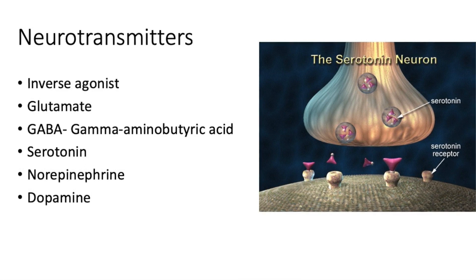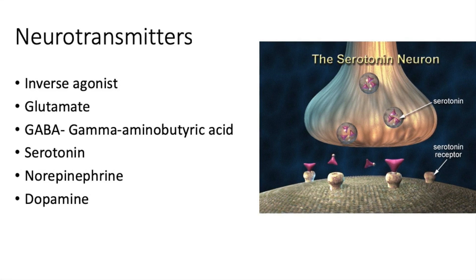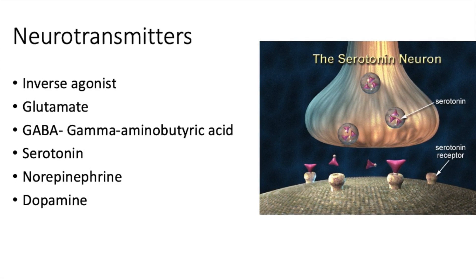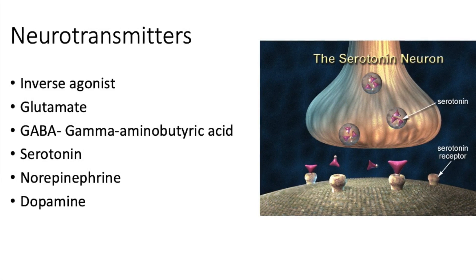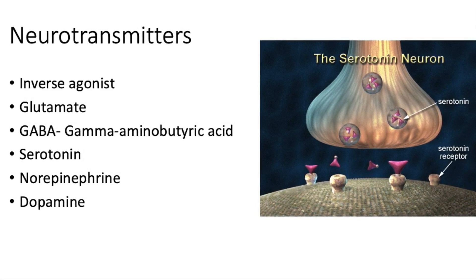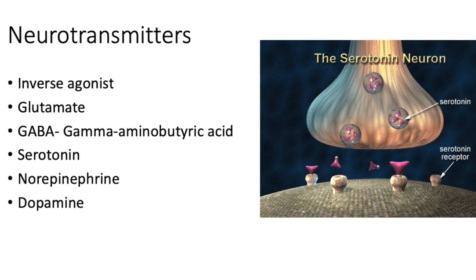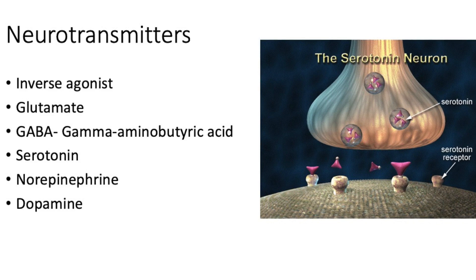Serotonin, or 5-HT, regulates behavior, mood, and thought. Low serotonin influences impulsivity, instability, aggression, suicide, etc. Norepinephrine, also known as noradrenaline, stimulates alpha-adrenergic and beta receptors and regulates blood pressure and heart rate. Dopamine is a catecholamine which affects emotional regulation, reward, motor coordination, etc.